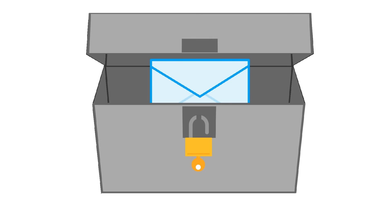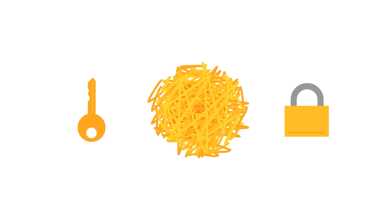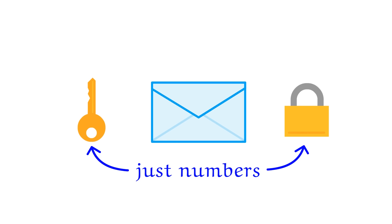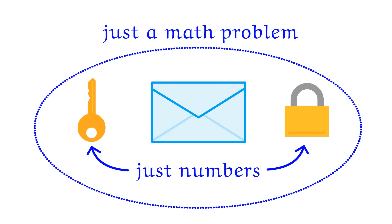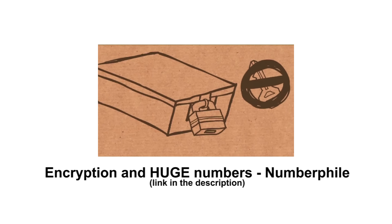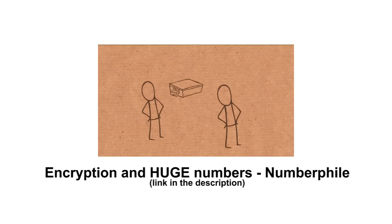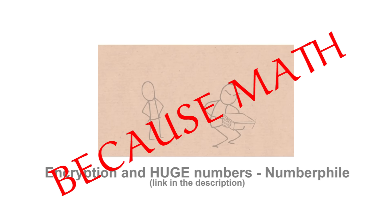And even this might be a bad analogy, since locking and unlocking messages makes it seem like they're concealed inside a box, when it's really more like blending it into something that looks meaningless, but in such a way that the original message can be reconstructed if you have the right number. Anyway, I'm stealing the padlock analogy from a Numberphile video. The short version is, because math.